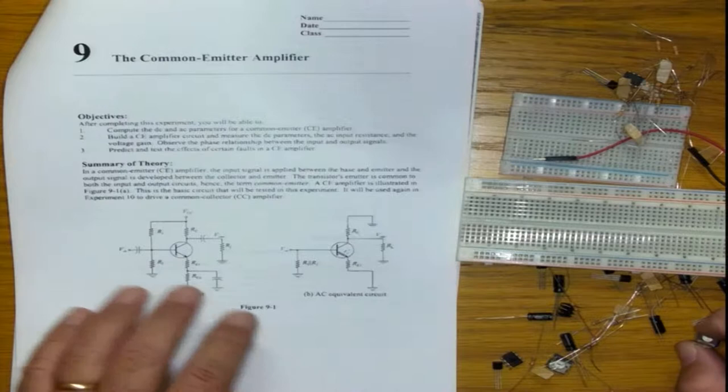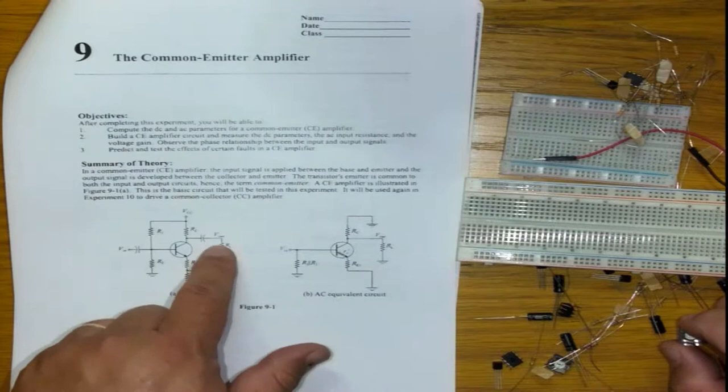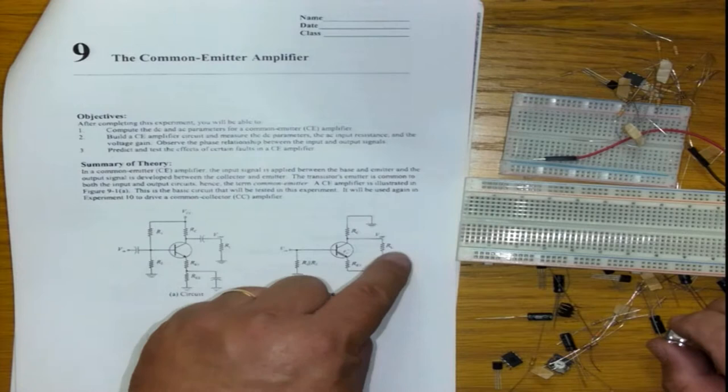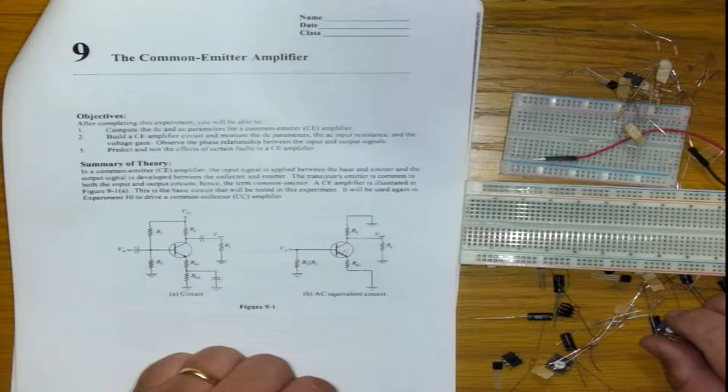The circuit will have an AC equivalent circuit whereby it looks slightly different than the normal constructed circuit. The reason is the capacitor becomes short circuit and the VCC power also short circuits itself. So in essence, this ground, this ground, this ground, that ground all connect to itself and that is a simplified version of the circuit.